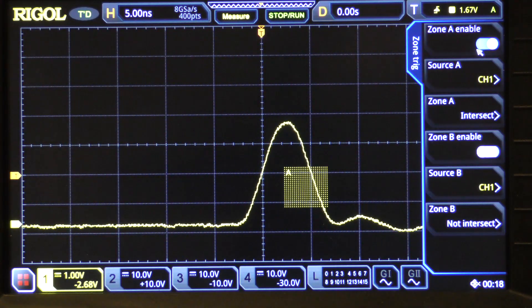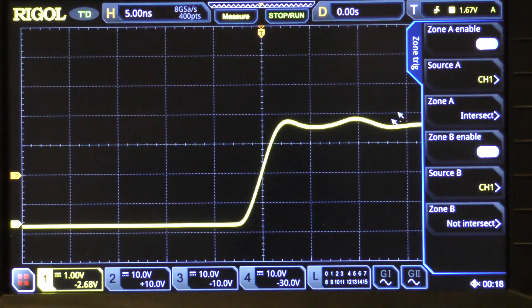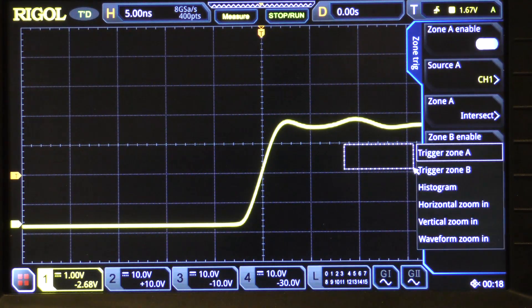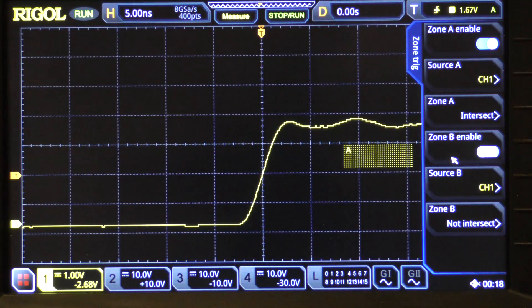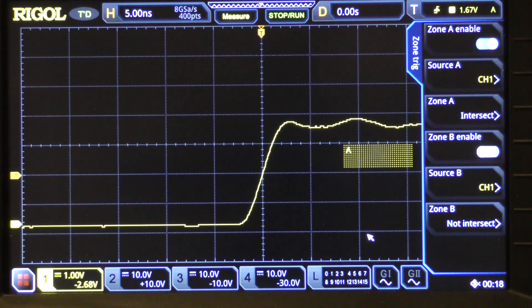But, suppose that we had thought, oh, we think it might be out here. Well, it's not out there, and we are looking for something that intersects that area, but nothing ever does. So, the scope has actually stopped triggering now.